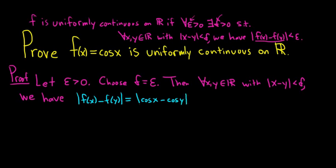And so now we're kind of stuck. So the trick is to use a trig identity. So this is equal to the absolute value of negative 2 sine of x plus y over 2 times sine of x minus y over 2. So this is the key in the proof, just knowing this trig identity or being able to reference it in some way.